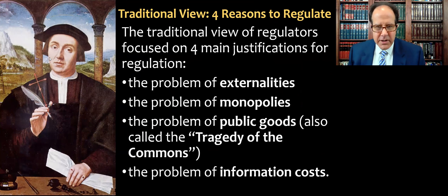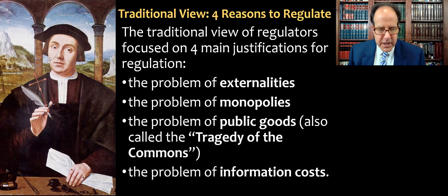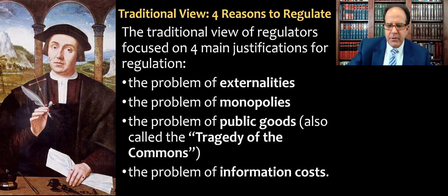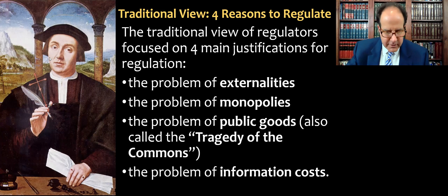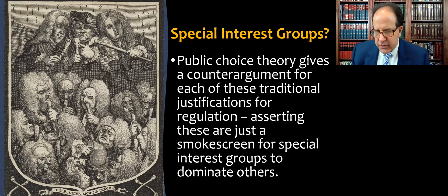Even if you believed in the free market and that things will take care of themselves if you leave people alone, the idea was that there are times where the system breaks down — where we have market failures. Those market failures fall into four categories: externalized costs or externalities, monopolies, the problem of public goods, and the problem of information costs, sometimes called information asymmetries. Public choice theory gives a counterargument for each of these traditional justifications, asserting that these are really just a smokescreen for special interest groups to dominate others.